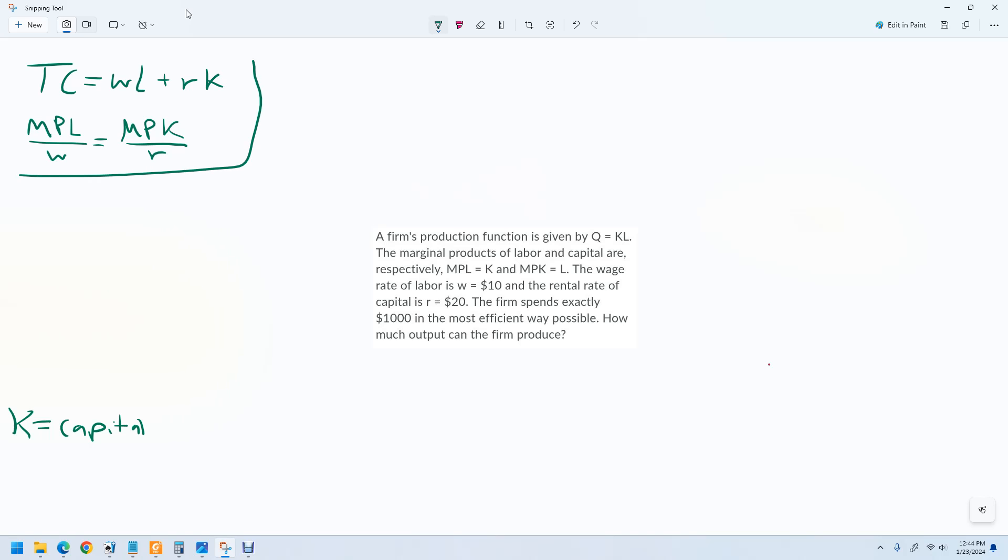We've already been given part of this. Actually, there's one more thing, is that once we figure out what K and L are, we need to multiply them, and that'll give us the quantity. This is the production function right here.